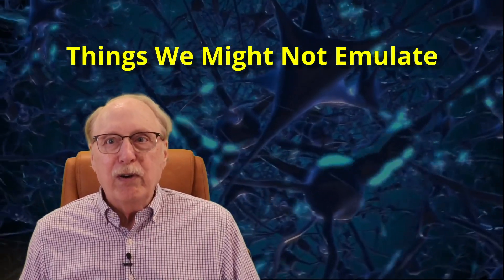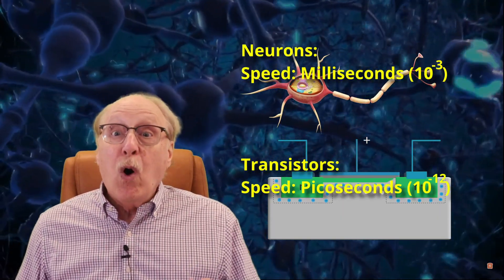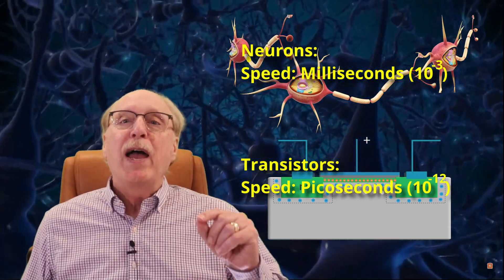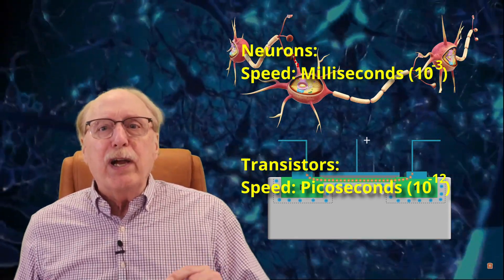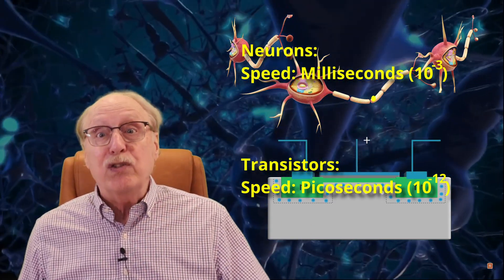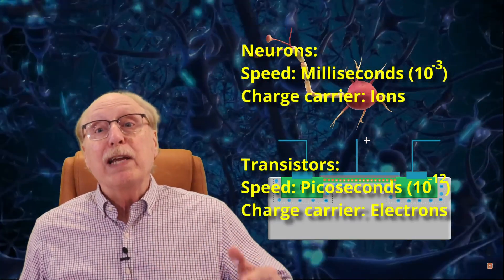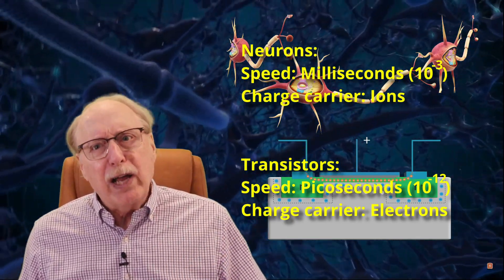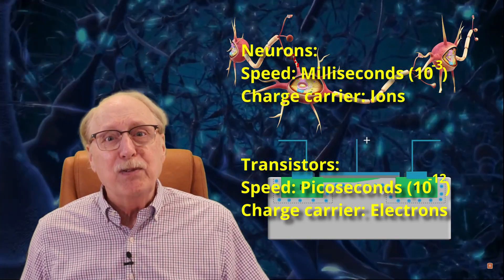But here are a few areas we might not choose to emulate. Neurons are about a billion times slower than transistors. Why? Because brains evolved from earlier life forms, and those life forms have been great at developing and deploying complex proteins. Some of the proteins in your neurons are great at transporting ions. While our electronic components are great at transporting electrons. The electronic processes are about a billion times faster.